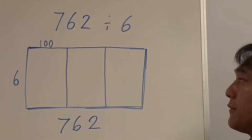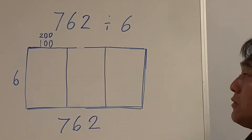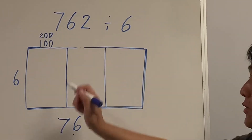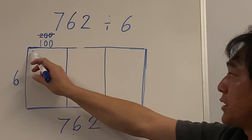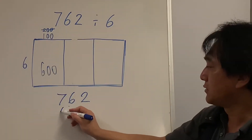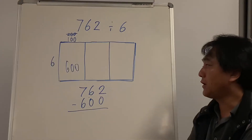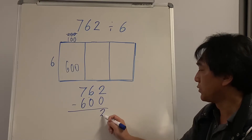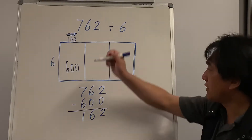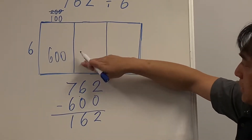6 times 100 is 600 — I can fit that in. Can I fit 200? 200 times 6 is 1200 — no, we don't have that many. So I can fit 100 columns of 6 rows, which is 600. I've now used 600 cupcakes, and what's left over is 162.